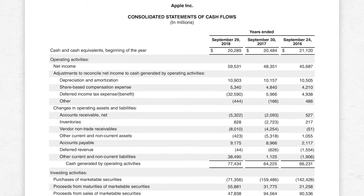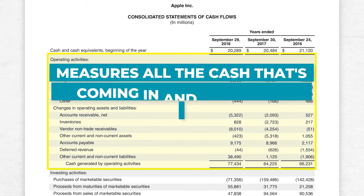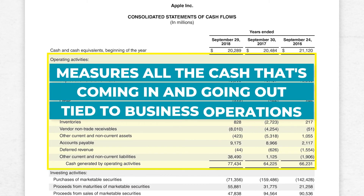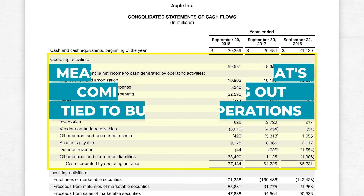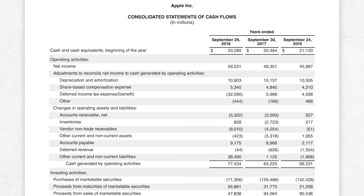The operating activities section measures all the cash that's coming in and also that's going out of the business that's directly tied to the business operations. For example, cash comes in when customers pay their bills, and cash goes out when the company pays its vendors and suppliers.